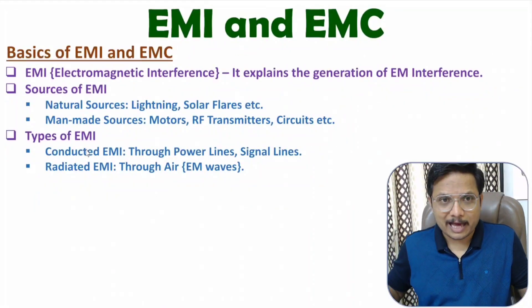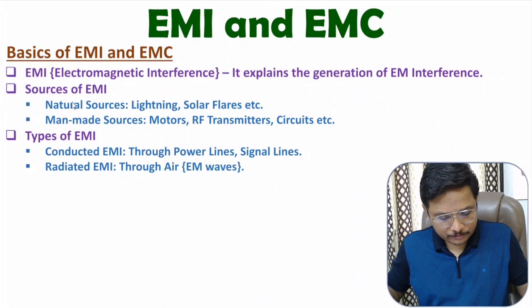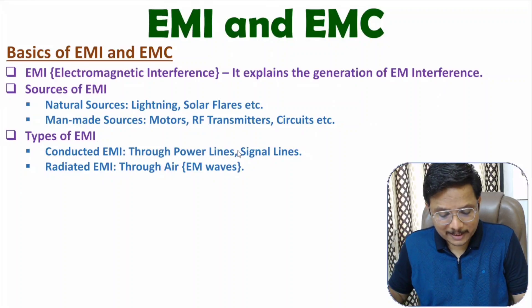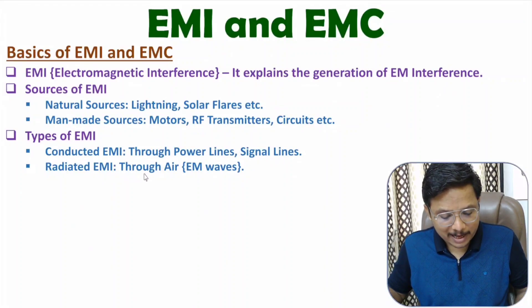Also, if I am connecting two devices via a transmission line, then via that transmission line also there can be a flow of conducted EMI. So, conducted EMI happens through power lines or signal lines, and radiated EMI happens via air.